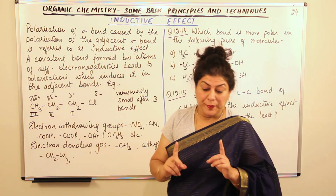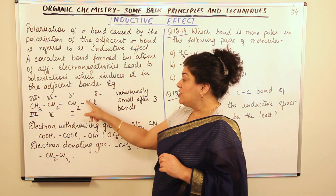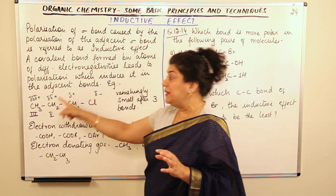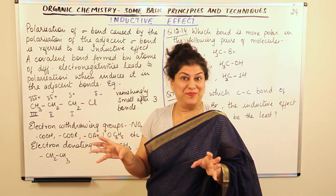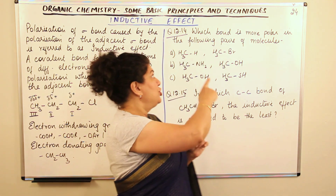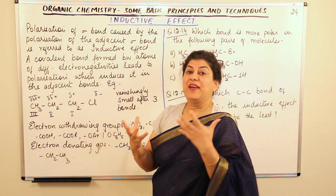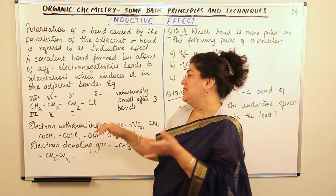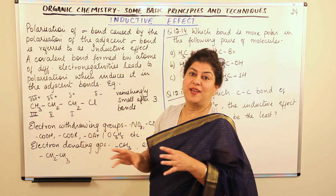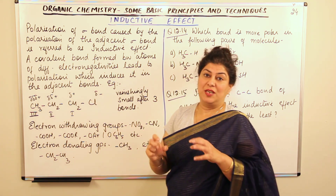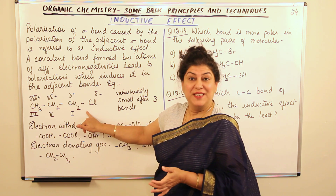I'd like to repeat something from the previous video. When discussing electron displacement effects in covalent bonds, whenever a species with an electronegativity difference is present within the molecule, it causes polarity, and this polarity is permanent. Since the atom causing polarity is present inside the molecule and is not going anywhere, the effect remains. Therefore, inductive effect is an example of a permanent polarization effect.